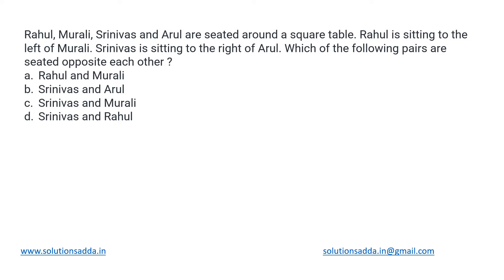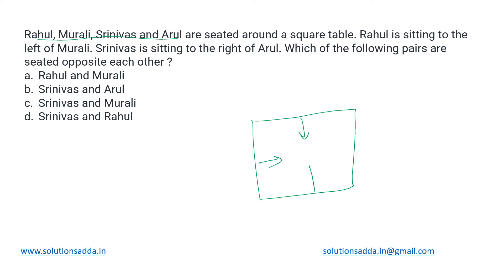This is a seating arrangement type of question. There are four friends — Rahul, Murali, Srinivas, and Arul — sitting around a square table. The table is represented with each person sitting at one side, and by default they will be facing inside.